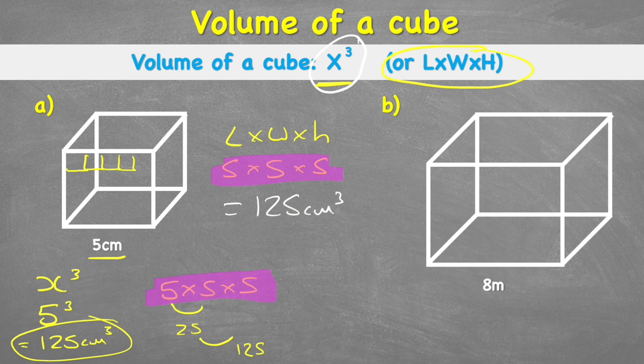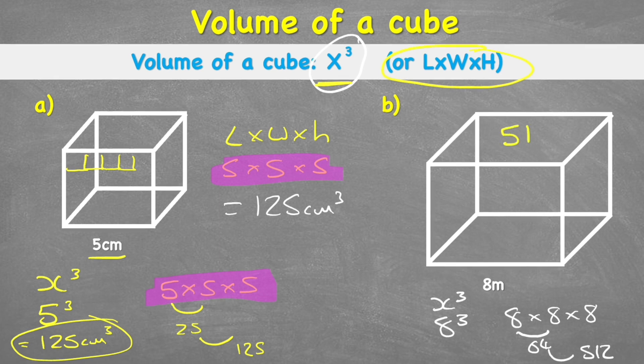Let's look at the second example. Eight meters this time is our measurement. So we start with our formula, X cubed. Input the information we know, which is eight. So we have eight cubed. Therefore, we're looking for the question eight times eight times eight. And eight eights are 64. 64 times eight is 512. So our answer to B is 512 centimeters cubed.